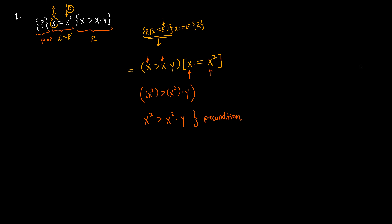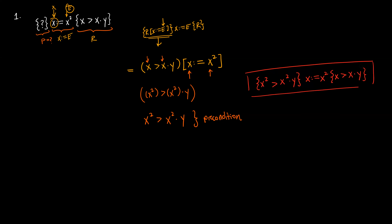If we put the entire triple together, we get: {x² > x²*y} x := x² {x > x*y}. With all occurrences of x replaced by x², we reach a state where x > x*y. This is the complete valid Hoare triple for that problem.